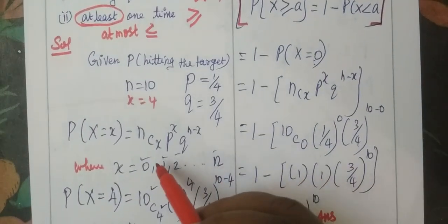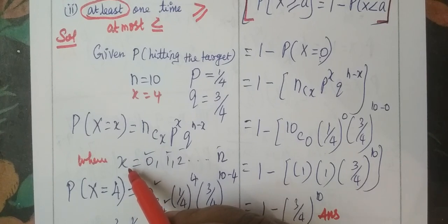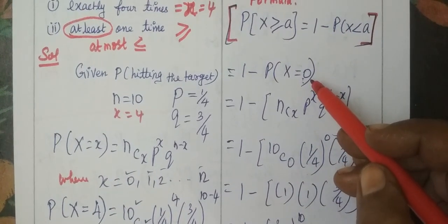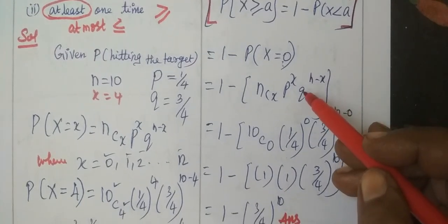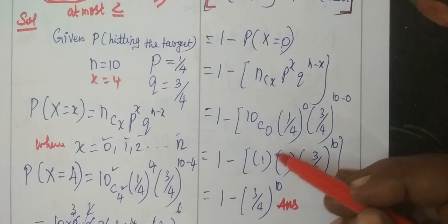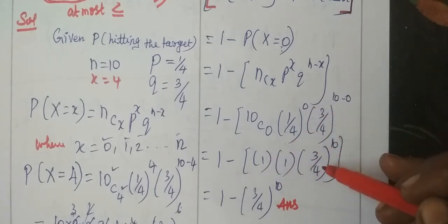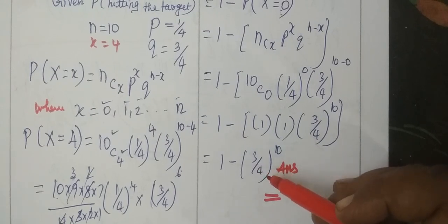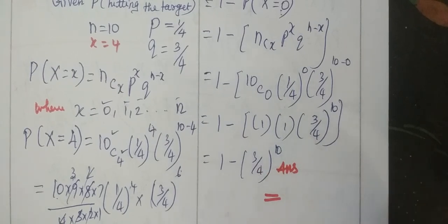So, X equal to 0, you are considering 0. Just substitute the value. 10C0 is 1. Anything to the power 0 is 1. Then 3/4 to the whole power 10. So the answer for this is 1 minus 3/4 to the whole power 10.